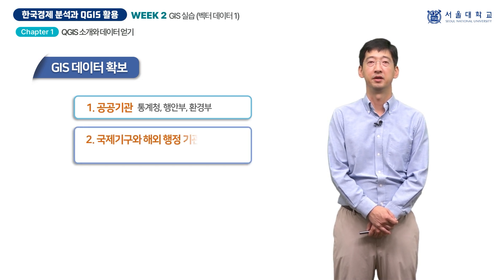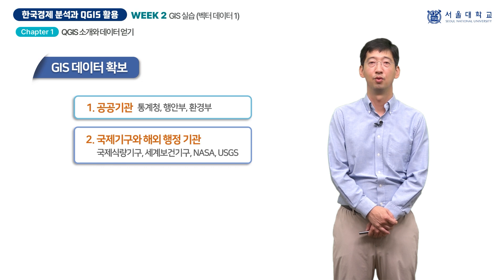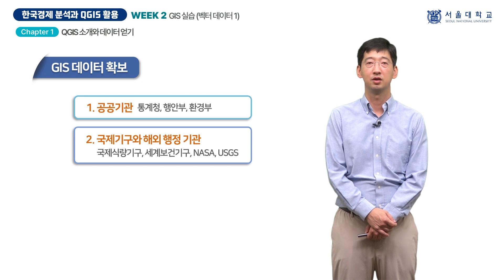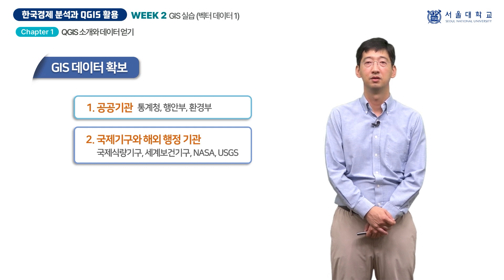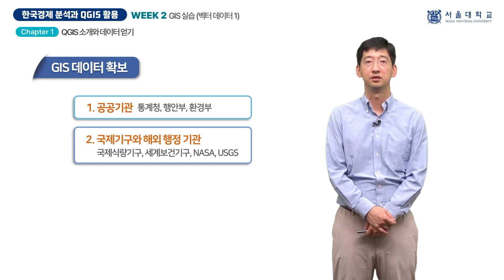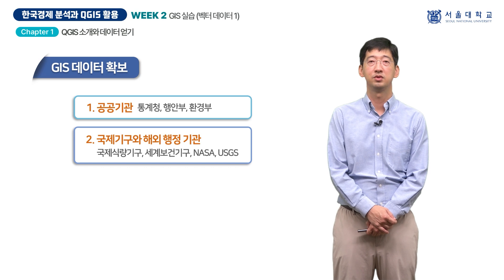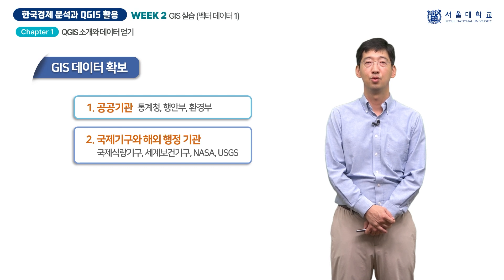둘째, 국제기구와 해외 행정기관입니다. 국제식량기구 FAO, 세계보건기구 WHO, 미국 항공우주국 NASA, 미국 지질조사국 USGS 등의 여러 기관에서 전 세계 범위의 공간 데이터를 제공하고 있습니다. 이런 데이터는 보통 글로벌 스케일의 연구나 대량의 데이터가 필요한 분석에 유용하게 사용됩니다.